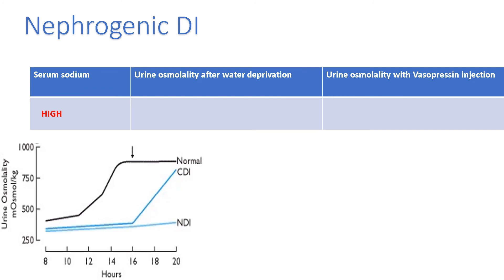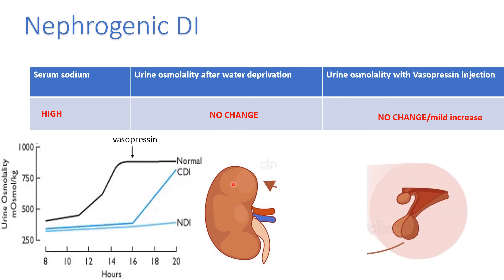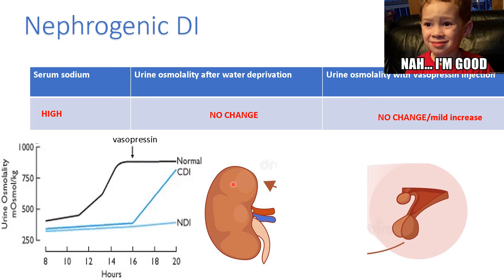After restricting water to monitor their response, urine osmolality after water deprivation shows no change — the urine osmolality remains low when it should be concentrating and reabsorbing water into the blood. This indicates the kidney is not responding well — either not receiving enough ADH or resistant to its effects. When we inject vasopressin, there is still no change, because the problem lies in the kidney being resistant to ADH regardless of whether it is endogenous or exogenous.